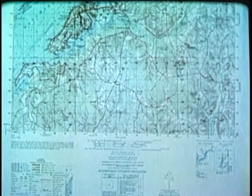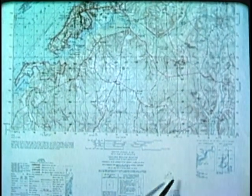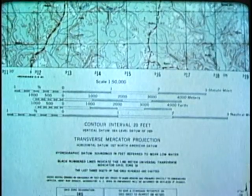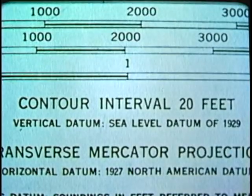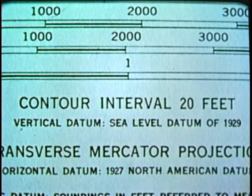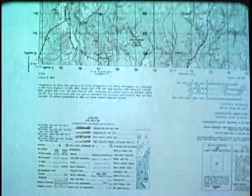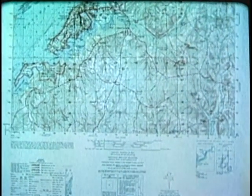First let us note what might be called the operating instructions. These are placed around the map edges and termed marginal information. This contains such essential information as the scale to which the map is drawn, graphic or bar scales to be used in translating map distances into actual ground distances, and the contour interval, or vertical distance, represented by contour lines on the map. The lower left hand corner contains the legend, which illustrates and identifies the symbols used on the map. For speed and efficiency in map reading, the first requirement is to learn and memorize the more common symbols.